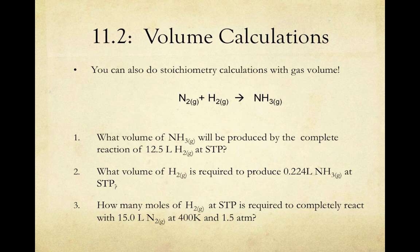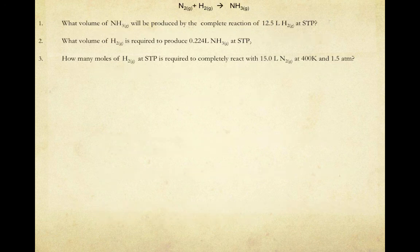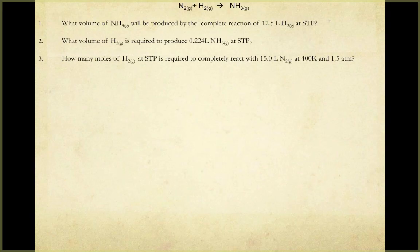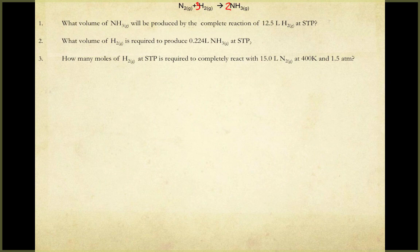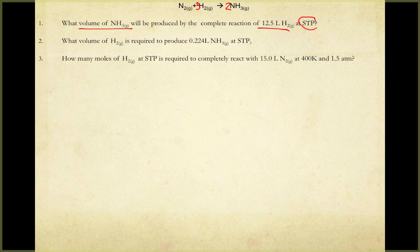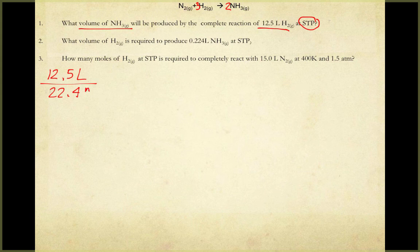We can use molar volume and PV = nRT to perform stoichiometric calculations using gas volume. Looking at problem 1: what volume of NH3 will be produced by the complete reaction of 12.5 liters of H2 at STP? After balancing the equation, since it's at STP I can use molar volume. Like a mass-to-mass problem, I start by converting what I'm given into moles: 12.5 liters ÷ 22.4 L/mol gives 0.558 moles of H2.